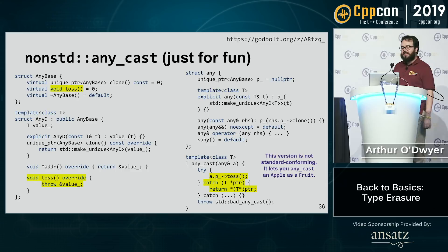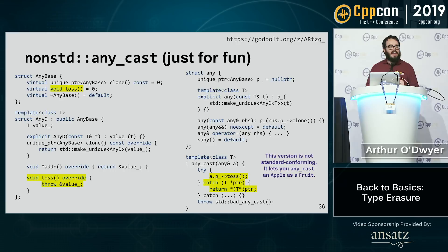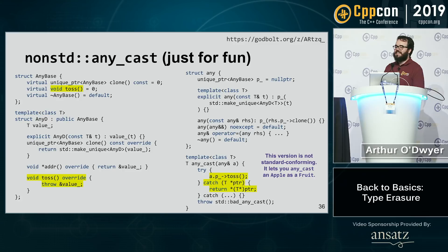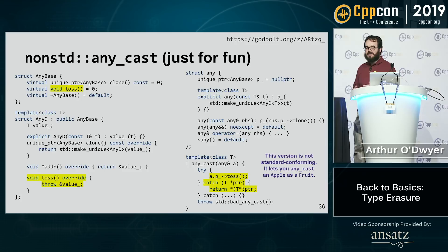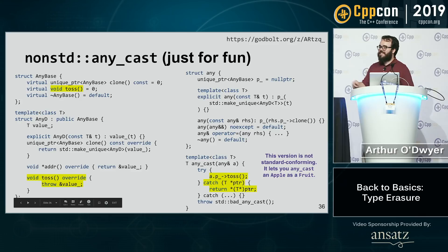Just for fun: a non-standard any_cast that asks 'do you contain a fruit?' — if it contains an apple, it says yes and gives a reference to the fruit part of that apple. Standard any_cast doesn't do that — that particular behavior is not in std::any's list of affordances. But you could implement it by throwing and catching a pointer: if you throw a pointer to an apple, you can catch it as a pointer to a fruit, using runtime type information.